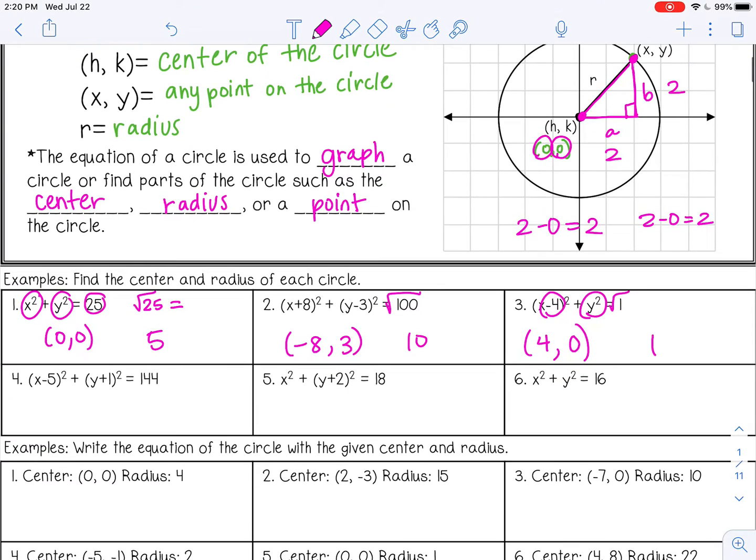All right, so let's see how you did. Number 4, you should have gotten (5,-1) with a radius of 12. Number 5, (0,-2). And then this is not a perfect square, so you can just round to the tenths place, 4.2. And then number 6, (0,0) with a radius of 4.